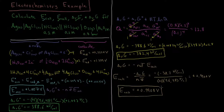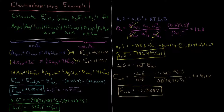Our concentrations aren't very far from standard states of 1 M, 1 M, and 1 bar, so the reaction quotient was only a small amount away from one. This perturbed our standard Gibbs energy of reaction only slightly, giving us an EMF of 0.9908 V — a little different from the standard EMF of 1.007 V calculated from our initial Nernst equation and standard reduction potentials.